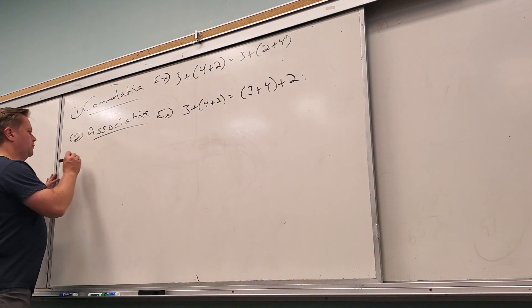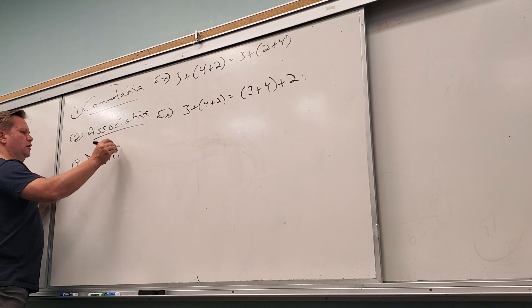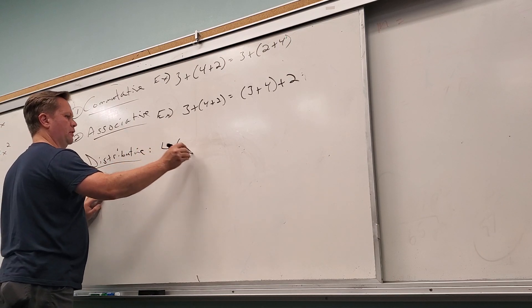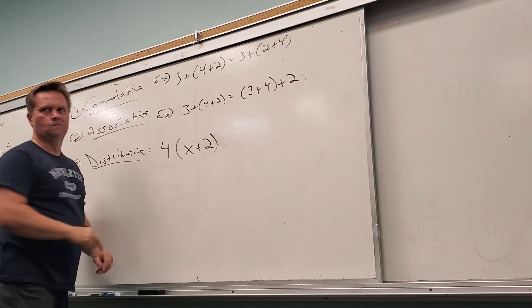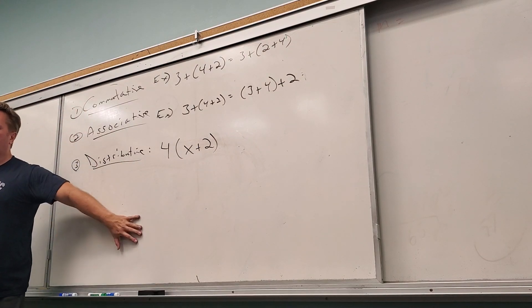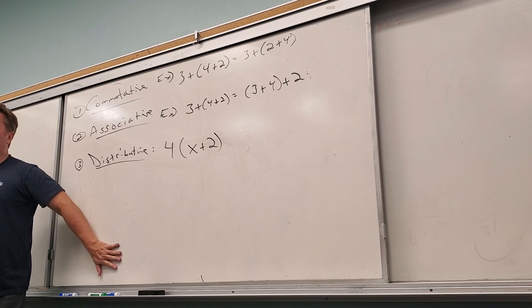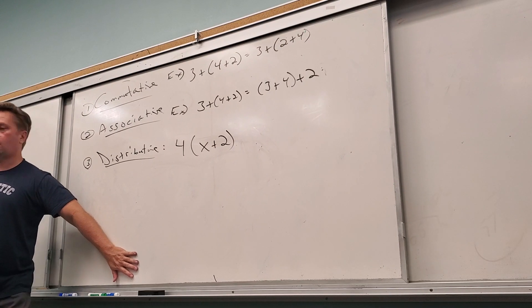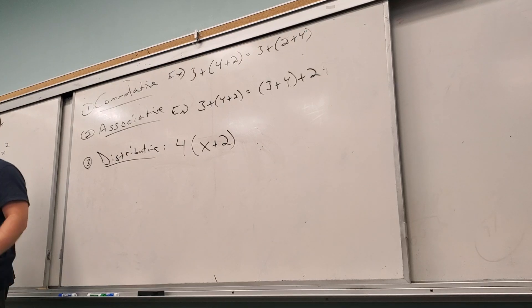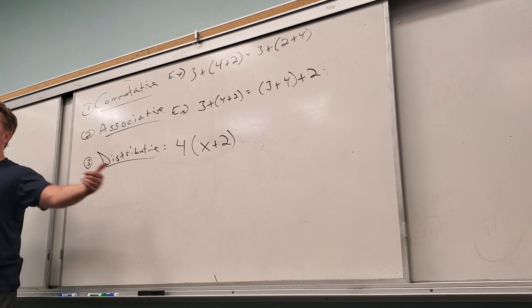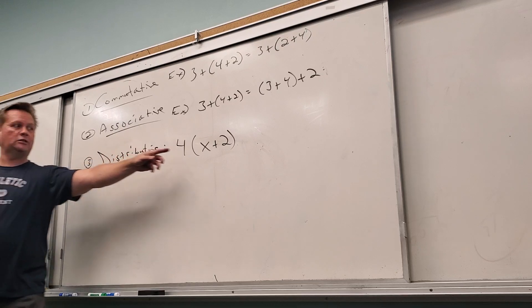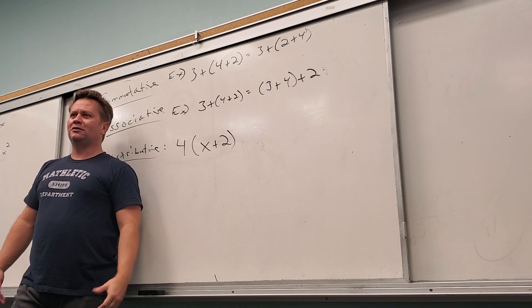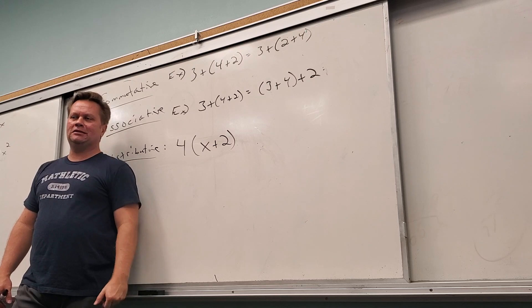What about distributive property? That one's a relatively easy property, but again, you guys know why it works. So if I have an example like four times x plus two, you guys know how to work that. What about that? Why are you allowed to do that? Is that order of operations? What would order of operations say? Yeah. Do inside the parentheses. Add x and 2. Do it.